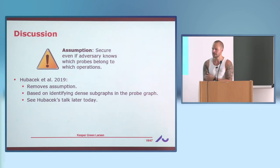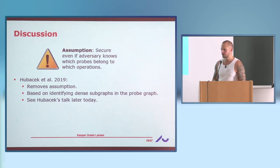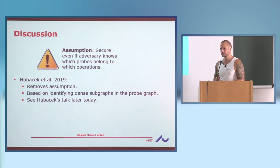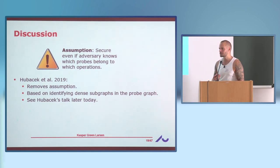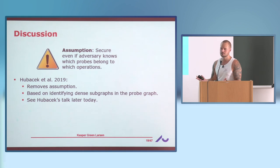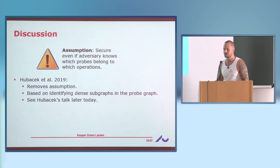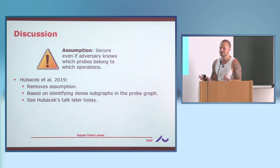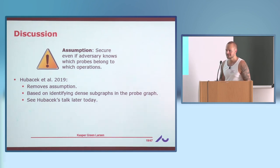An important point: if you don't assume online but look at the offline setting, if you manage to prove a super-linear lower bound, you would also prove super-linear lower bounds for sorting circuits, which is a big open problem. So it's probably hard to remove the online assumption.